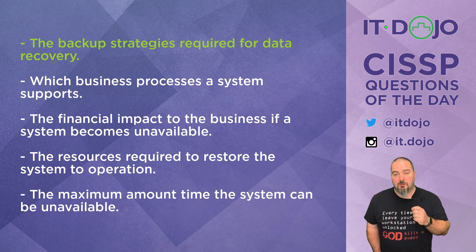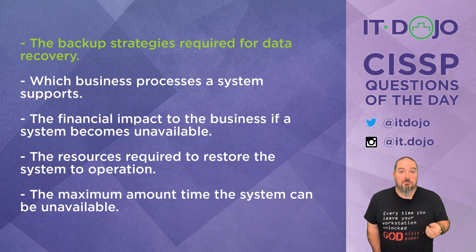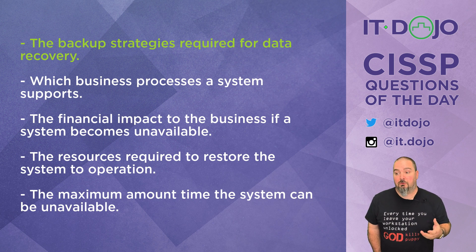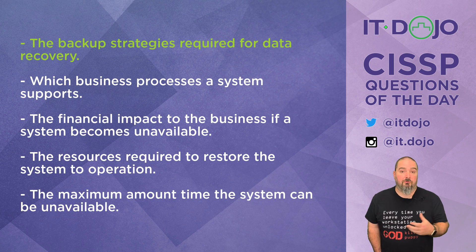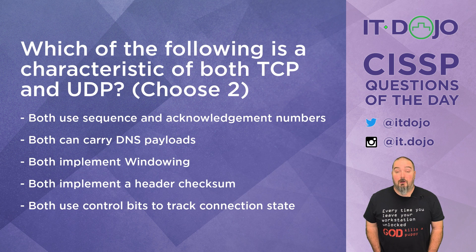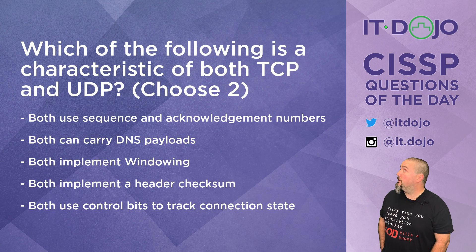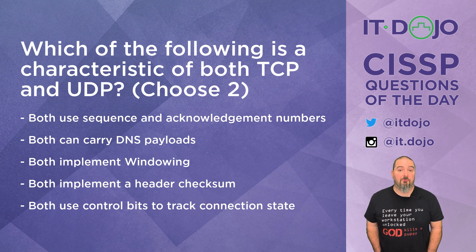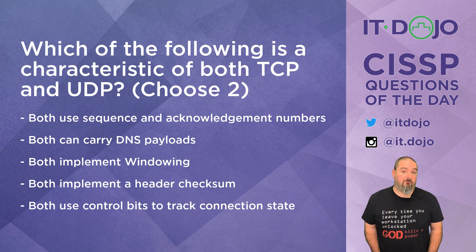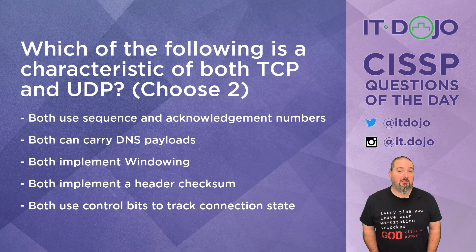Once we know the answers to these questions, it helps us create a triage so we know which things need to be addressed first, which are more severe and sensitive — making sure they either don't go down in the first place, or if they do, we get them back up and running as quickly as possible. Here comes question number two. Which of the following is a characteristic of both TCP and UDP? There are two correct answers. Please find both of them and click pause if you need to.